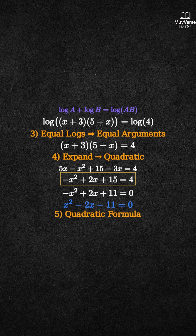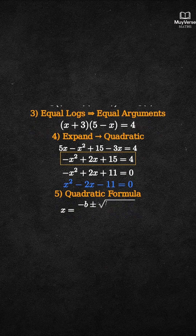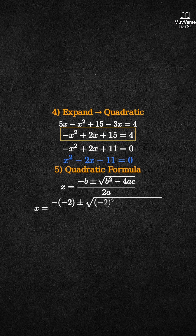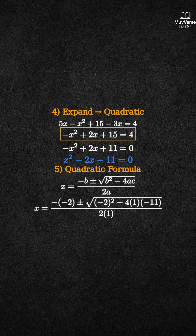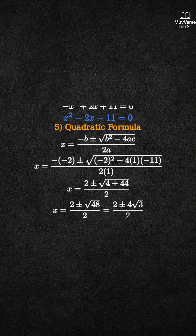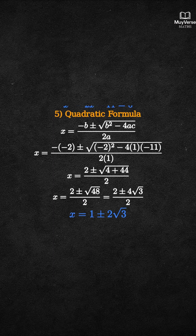Step 5: Solve the quadratic with the quadratic formula. x equals negative b plus or minus the square root of b squared minus 4ac, all over 2a. Here a equals 1, b equals negative 2, c equals negative 11. Substituting, under the square root we get 4 plus 44, which is 48. The square root of 48 is 4 times root 3. So x equals 2 plus or minus 4 root 3, all over 2, which simplifies to 1 plus or minus 2 root 3.